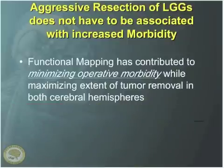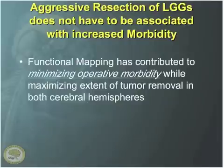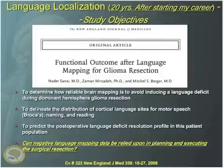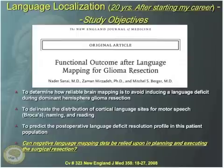Doing an aggressive resection doesn't necessarily mean it's going to be morbid. The goal is to maximize extent of removal while minimizing operative morbidity. We do this with functional mapping techniques. Even when working in the dominant hemisphere, a study we published in 2008 in the New England Journal showed that when we operate in the dominant hemisphere, even if we do not find language sites, we can rely on that data to base a resection upon.